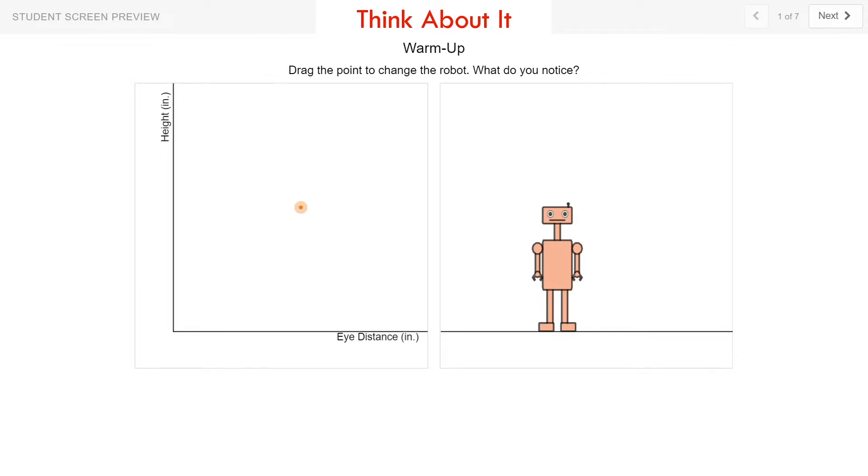Here's a Desmos activity called Robot: what does a point in a scatter plot mean? The first slide asks us to drag the point and change the robot, and asks us the question, what do you notice? So I'm going to drag this point around the graph, and you should look simultaneously at the graph and the robot and see how the robot is changing as I move the point on the graph.